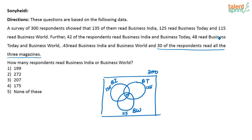Now let us use the information we have. 42 read Business India and Business Today, meaning this intersection is 42. Out of this 42, 30 read all three. So how many people read only Business India and Business Today? That is 42 minus 30, which is 12.